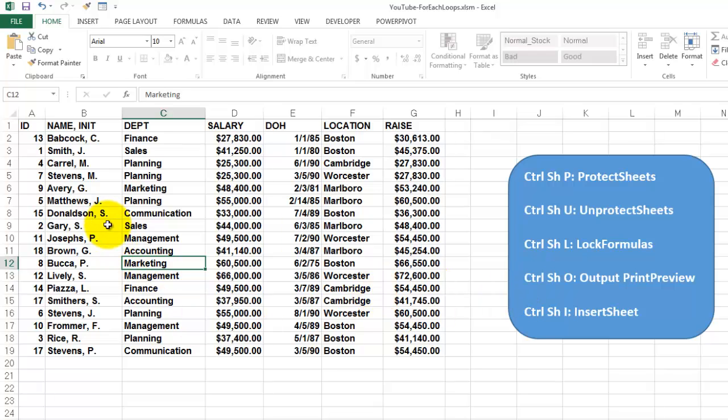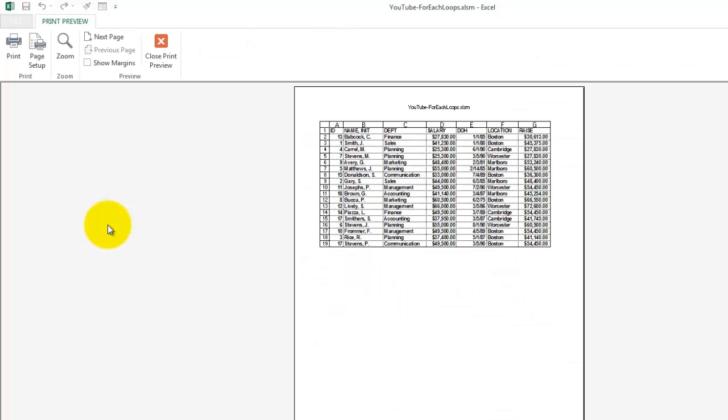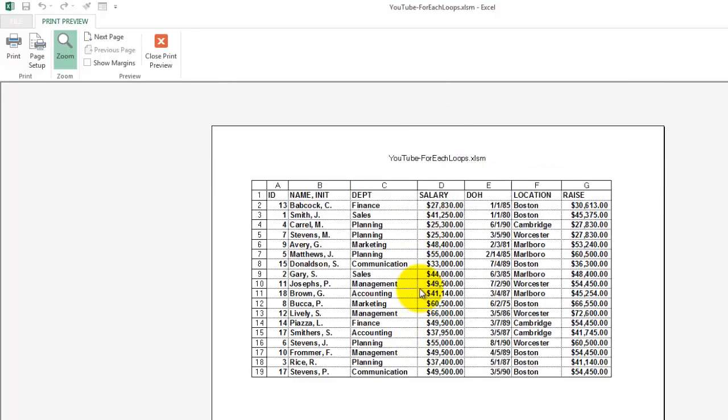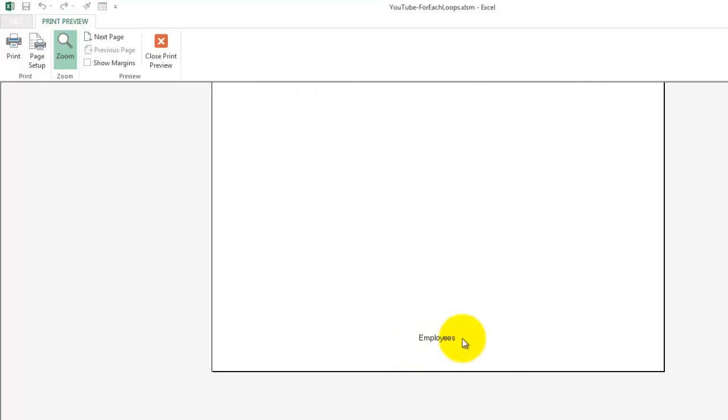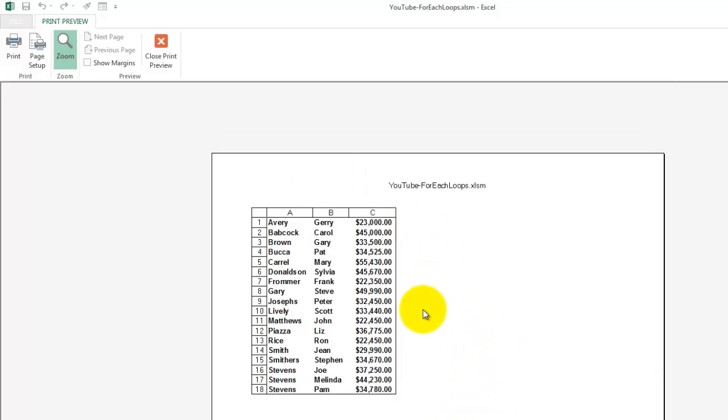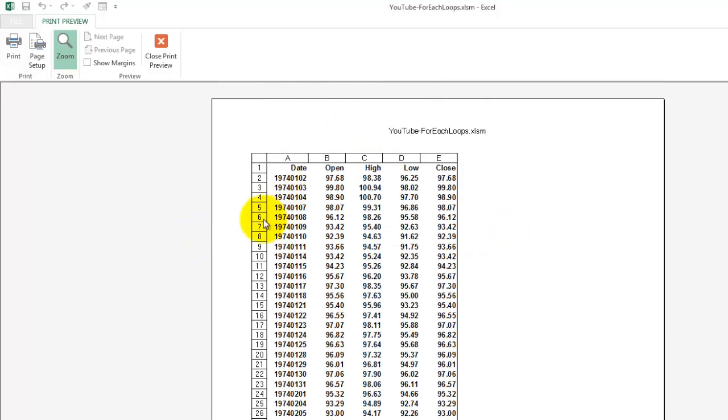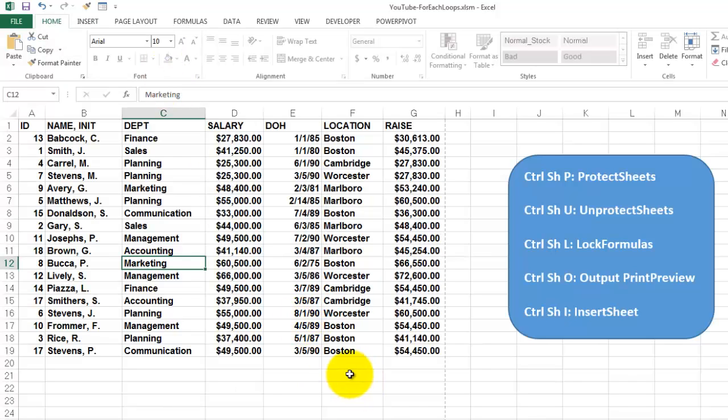Then we are going to create print previews. Ctrl-Shift-O. Here is the first print preview. It puts on top the name of the file. At the bottom the name of the sheet. Employees. I close the print preview. It gives me a second sheet. I close that one. The third sheet. You see we have headers on. And it says I have no more sheets in the collection. So I am done.